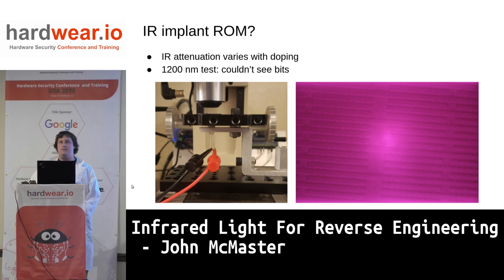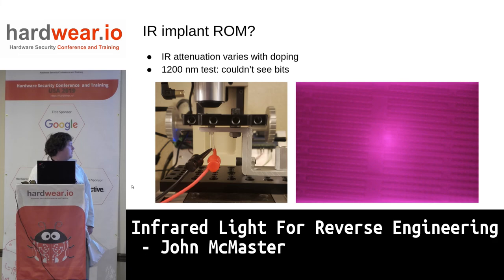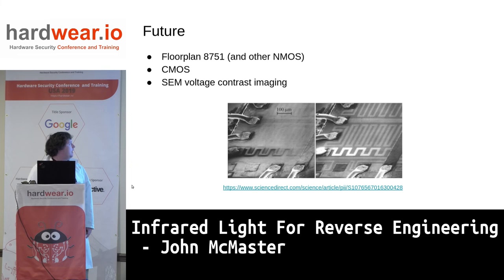Another thing I tried was looking at implant ROMs. I heard that these ROMs, which have very small doping differences, change their response to infrared light depending on whether it was a 1 or a 0. The idea is you could use this to do firmware extraction on certain chips. Unfortunately I didn't see any differences, at least with some quick tests. I'd like to revisit this and try 1,060 nanometers and a few other tests, but no results so far.